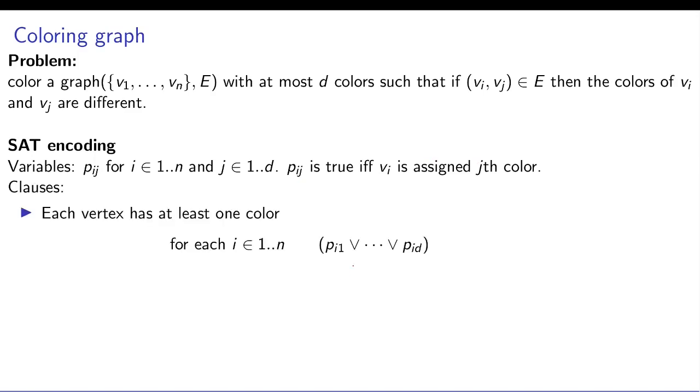Now we try to write down the constraints that will encode this coloring problem. The first requirement is that each vertex has at least one color. For a given i, there should be some j for which this clause must be true.